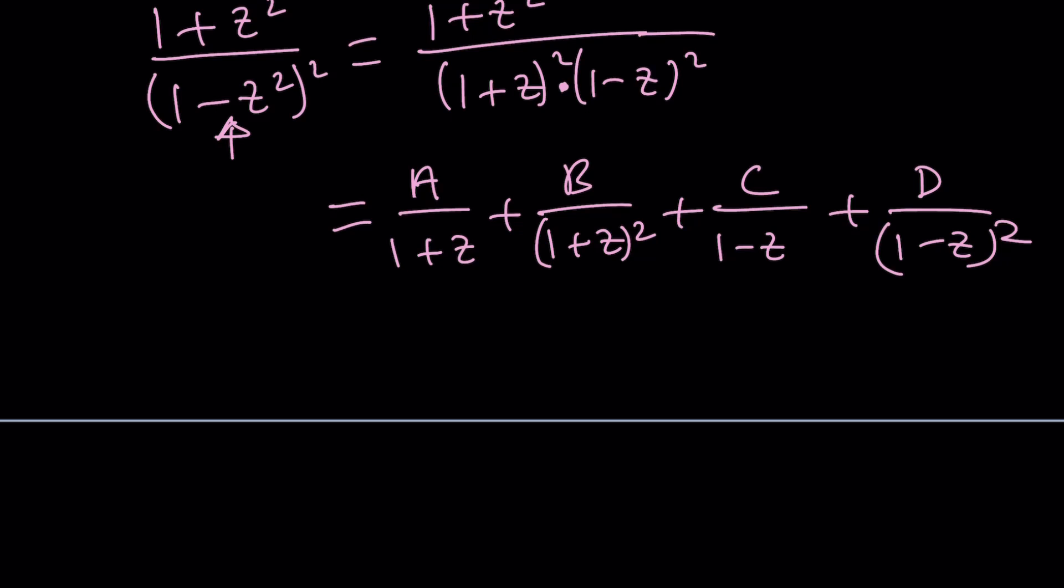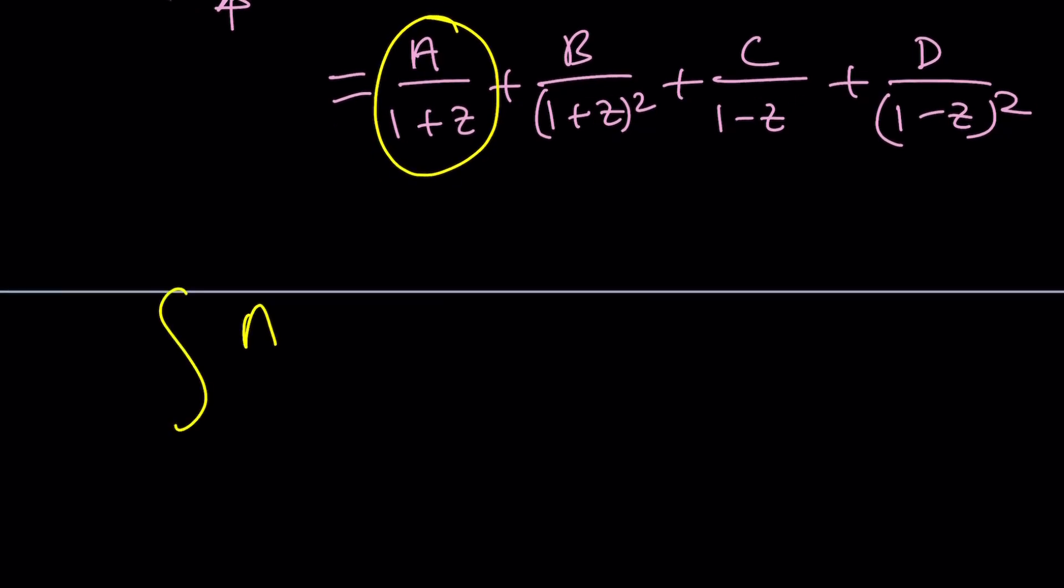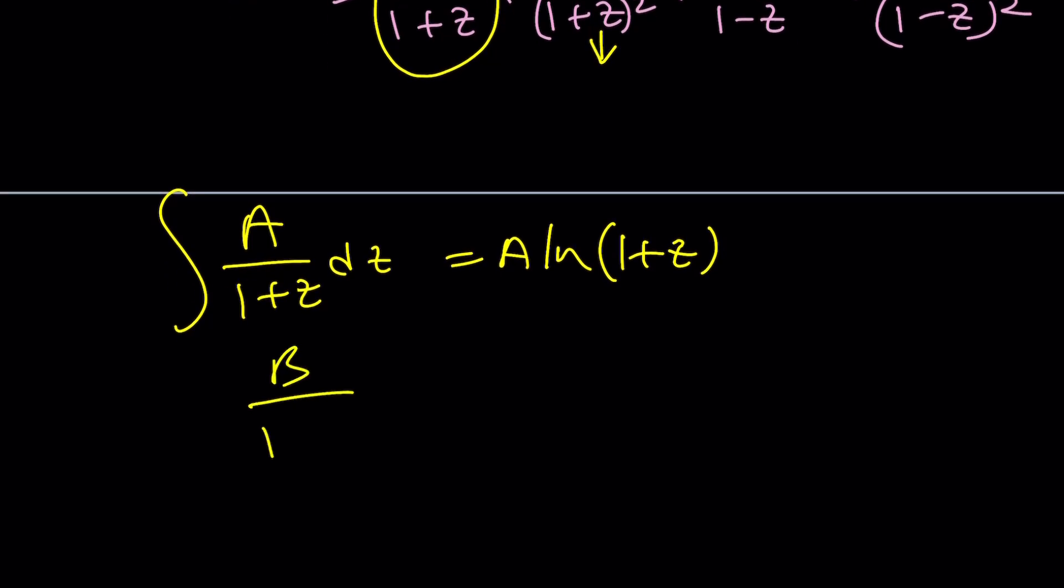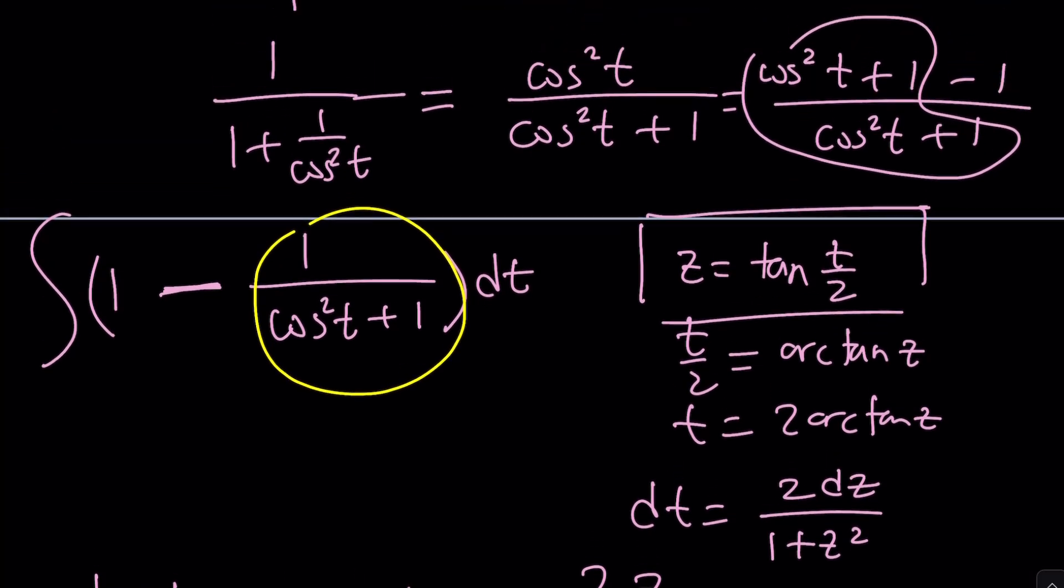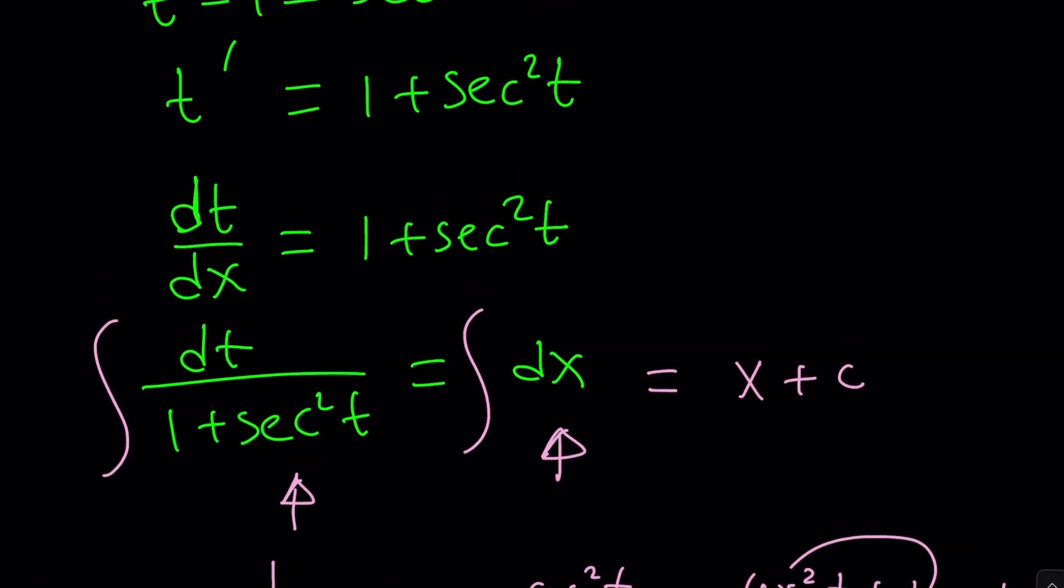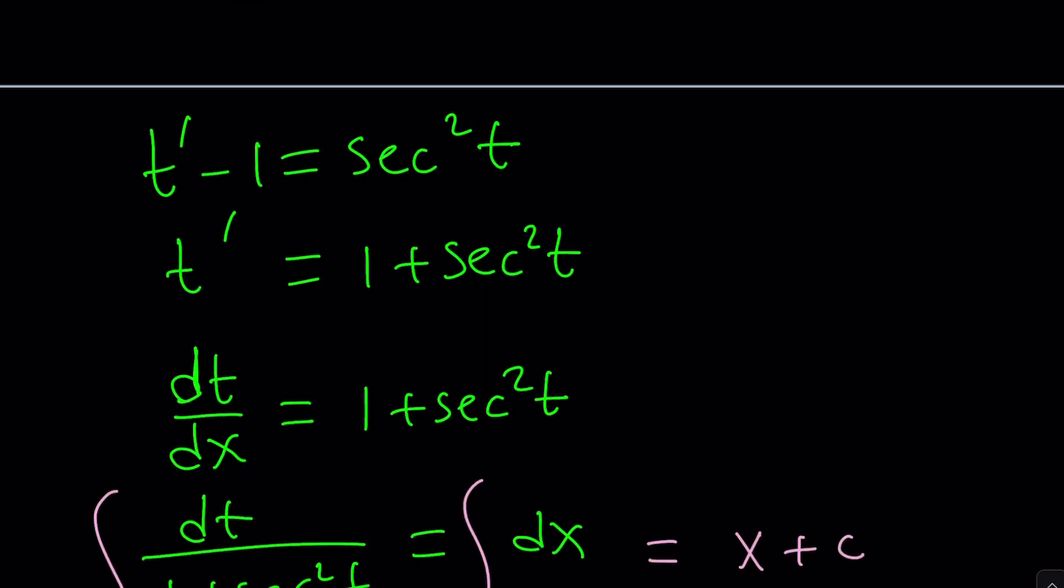Once you find the values of a, b, c, d, then this is very easy to integrate. For example, ∫a/(1 + z)dz would be a·ln(1 + z). For the squared term, if you differentiate 1/z with respect to z, you get -1/z². So it would be -1/(1 + z). You see how easy that is to integrate? But of course, at the end, you need to replace z with tan(t/2), and then that should give you the answer in terms of t. But what is t? t = x + y.